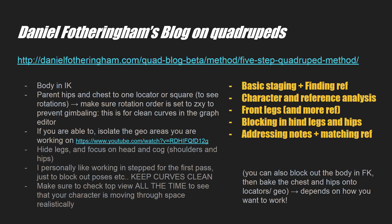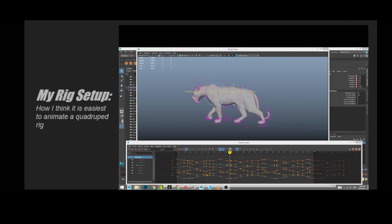He goes through how to do basic staging, finding reference, and then analyzing it front foot — so isolating your character so you only see parts of the body at one time. This helps you focus in on that part of the animation and make it really nice before adding other parts. We've already found our reference and analyzed our characters, so now we're going to go into building our Maya scene and blocking it out.